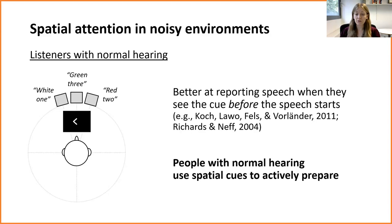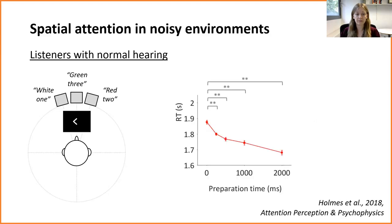These results imply that people with normal hearing are using spatial cues to actively prepare their attention before the speech begins. In a previous experiment we showed that the length of time that people have to prepare spatial attention affects their performance. We manipulated the length of time that the visual cue was on the screen before the talker started speaking. The length of the preparation interval is shown on the x-axis of this graph and the y-axis shows participants' reaction times for reporting words spoken by the target talker. We found that reaction times get progressively better as participants have longer to prepare for the location of the target talker.